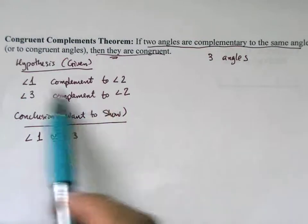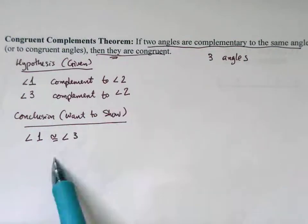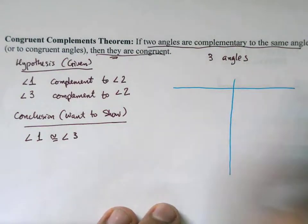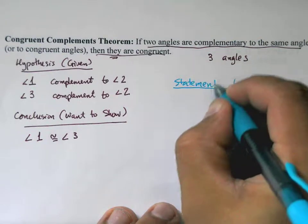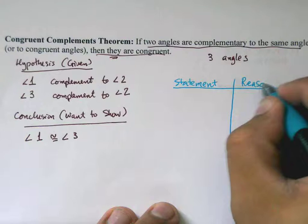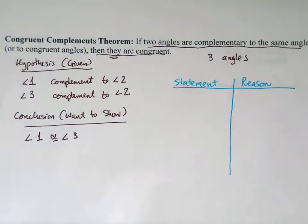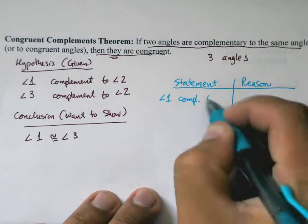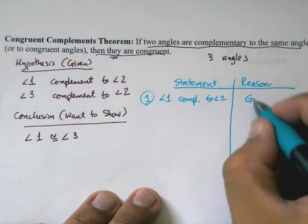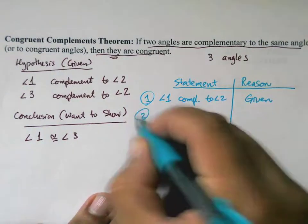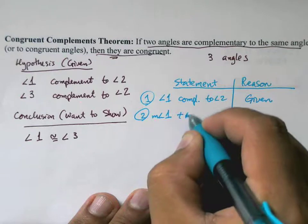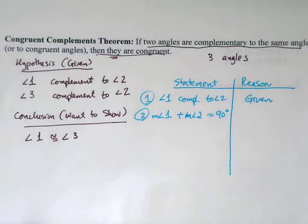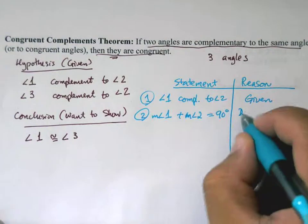I'm going to do this using a two-column proof with columns for statements and reasons. The first given is that angle one is complementary to angle two. By the definition of complementary angles, the measure of angle one plus the measure of angle two equals 90 degrees.